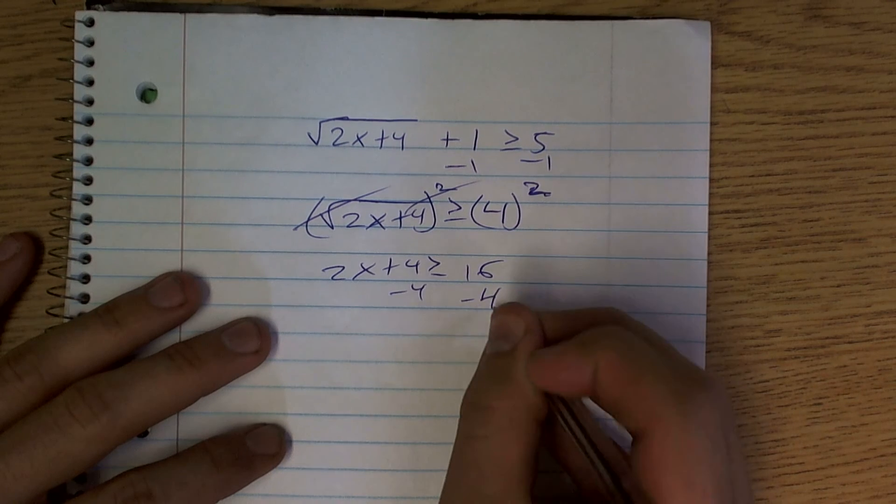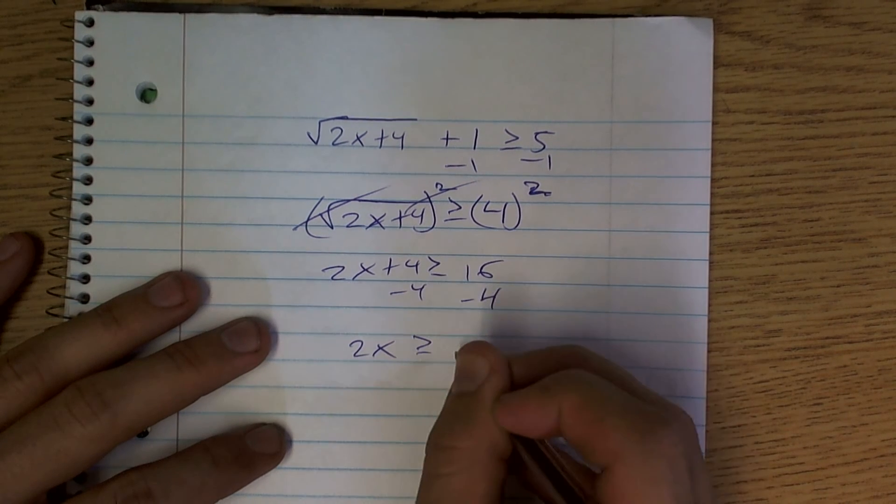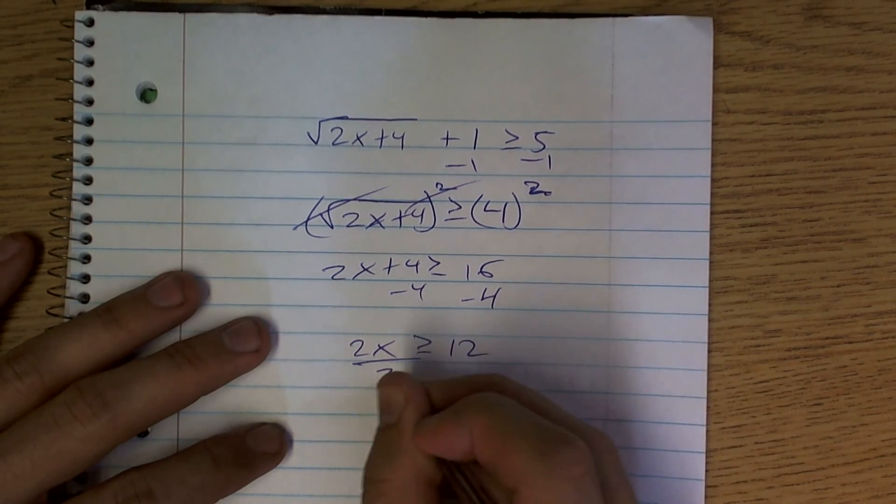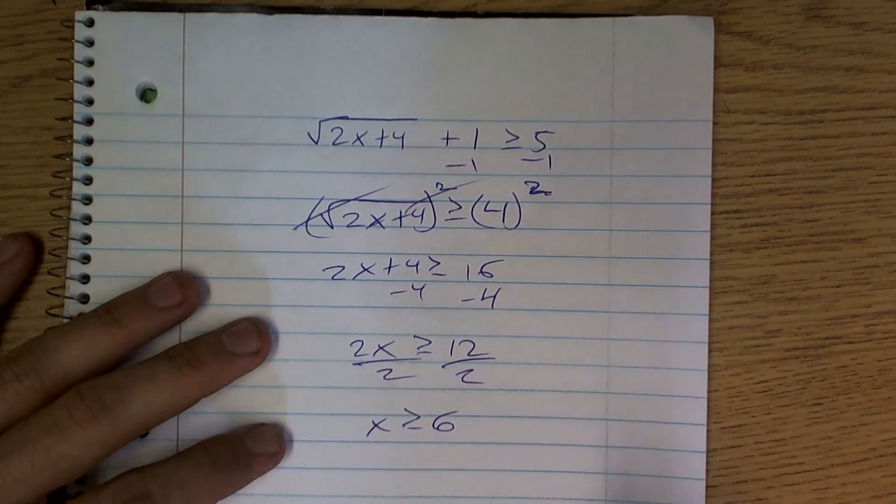And now you subtract your 4, so you have 2x is greater than or equal to 12, divide by 2, x is greater than or equal to 6.